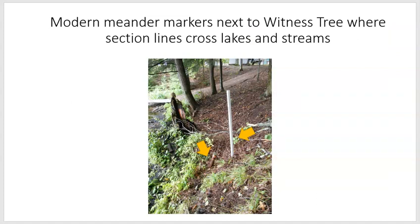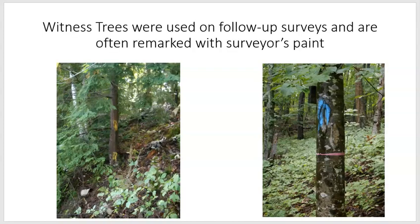In addition to marking section lines, the original surveyors also marked meander lines — anywhere that a section line would bisect a lake or a stream. In this example, we have modern markers of a steel pipe, brass cap, and a plastic post. These smaller trees blazed as witness trees illustrate follow-up surveys all the way into the 1950s and 1960s. Great historian and DNR worker Paul Brenner did many of these surveys during his tenure after serving in World War II.